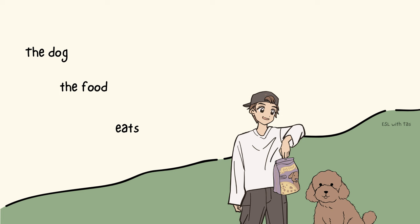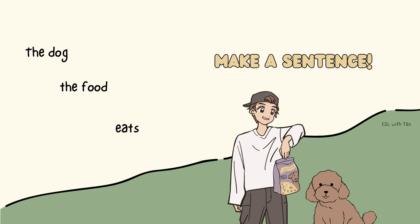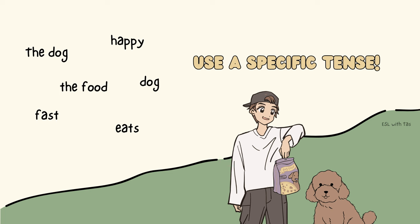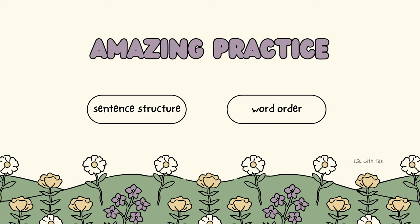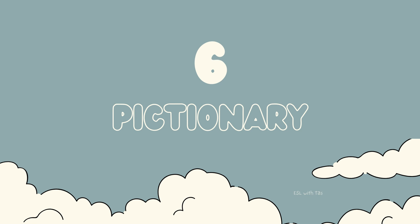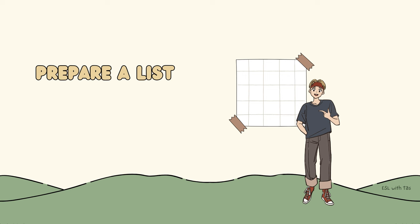Number five is the sentence building challenge. Provide the student with a list of random words, and the student must use those words to create a grammatically correct sentence. When they get the hang of it, challenge them to make more complex sentences by adding extra nouns, adjectives, or adverbs. You can also give them a specific grammatical focus, such as using the past tense. It's an amazing practice for sentence structure and word order.